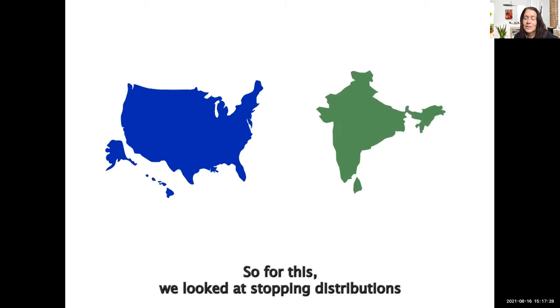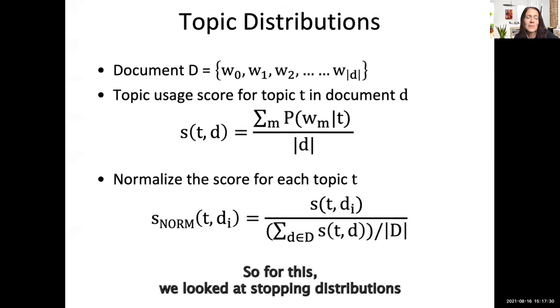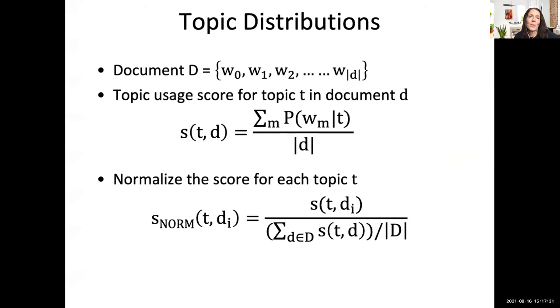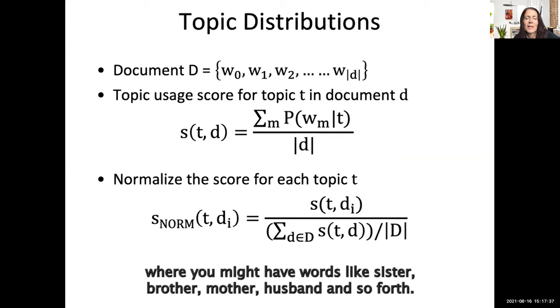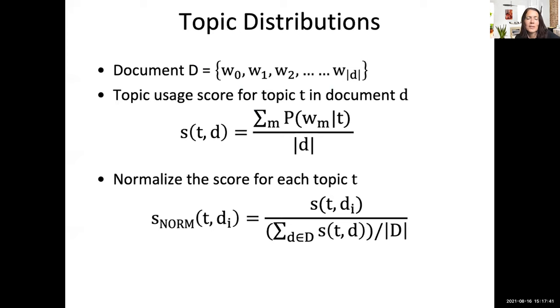For this we looked at topic distributions. Given a certain topic — like the topic of family, where you might have words like sister, brother, mother, husband, and so forth.